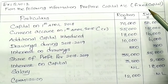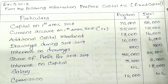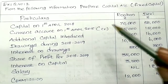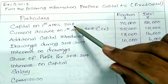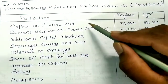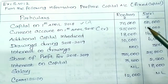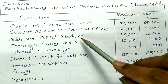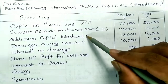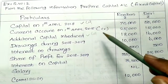The capital account opens on 1st April 2018 with balances of 70,000 and 50,000. The capital account opening balance is on the credit side. Additional capital introduced also comes into the capital account on the credit side.